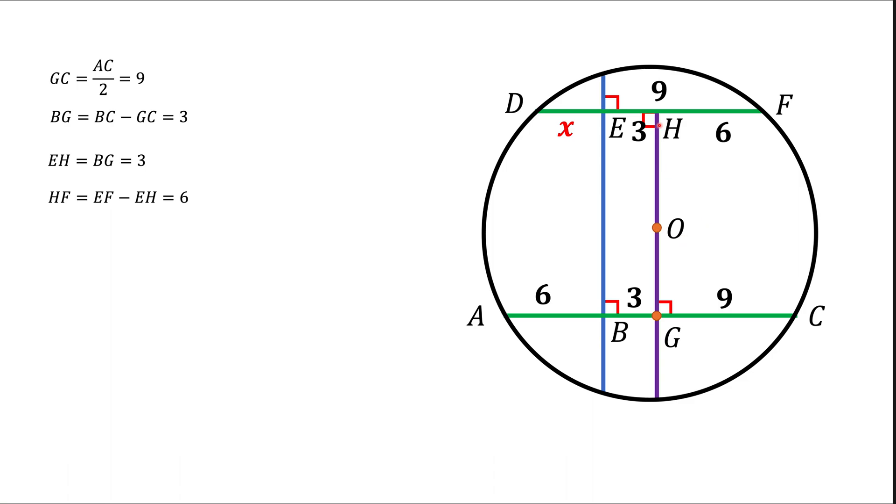And that means that point H is in the middle of DF. And since HF is 6, DH also has to be 6, and that means that DE has to be 3. And that's really the final answer.